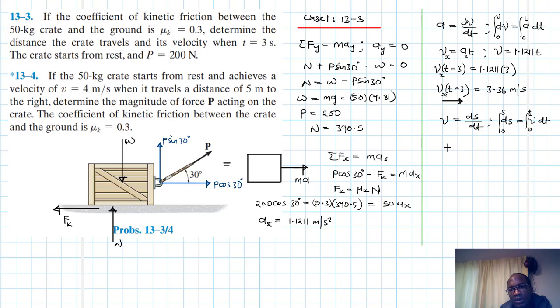So this just becomes s itself is equal to integral from zero to t of v. And our v we found it to be 1.1211 t, which therefore just becomes 1.1211 t squared divided by 2. So s x at t equal to 3 seconds just becomes equal to 1.1211 times 3 squared divided by 2, so this just becomes 5.04 meters.